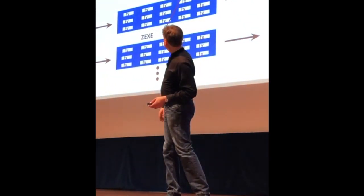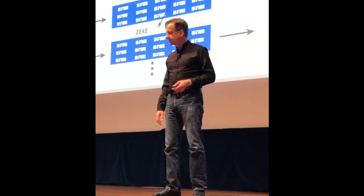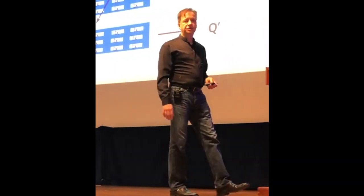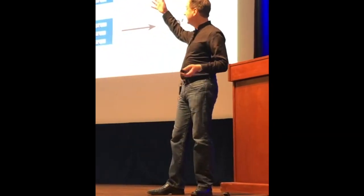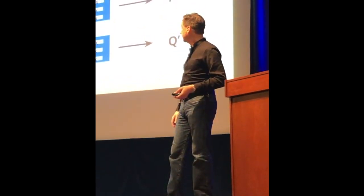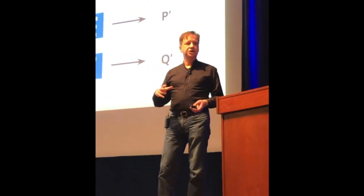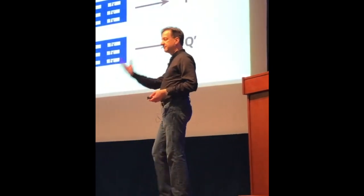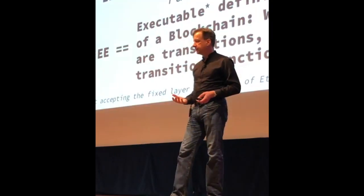In Ethereum 2, the beacon chain now holds this new layer of execution environment scripts or contracts. I show an example here of an ETH1-style execution environment, a UTXO or an XE, and those are running inside of that same beacon chain. Those are defining the state transition functions and defining what transactions mean inside of a block in each of those environments.